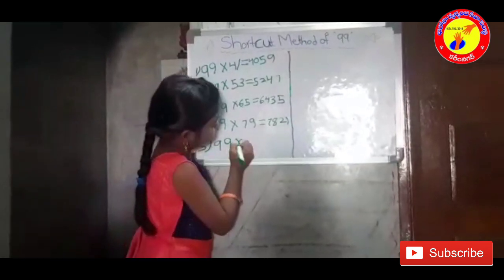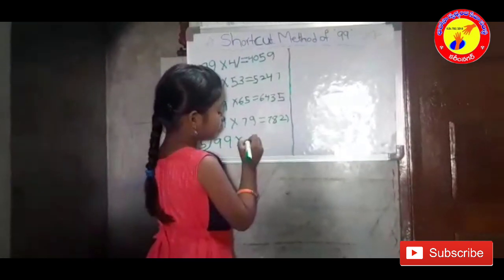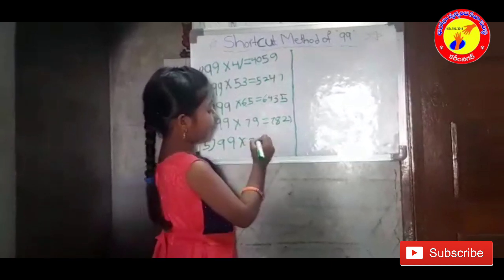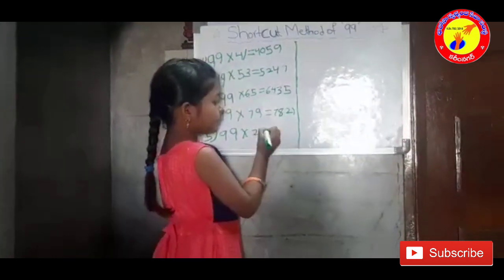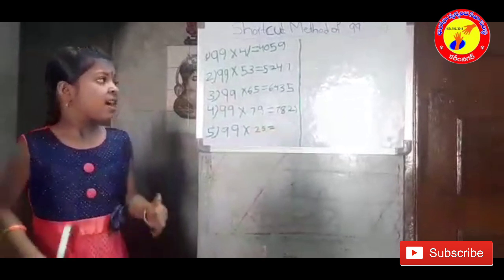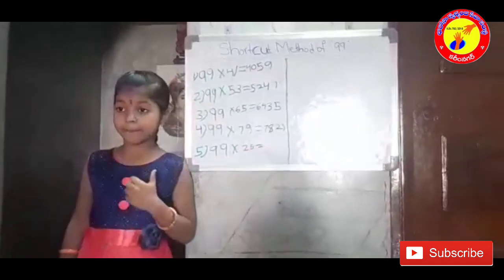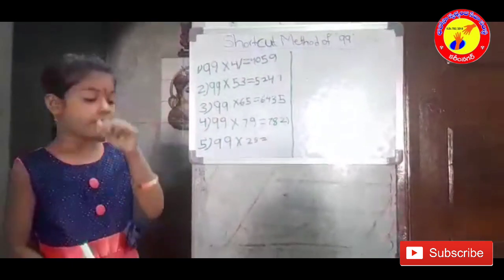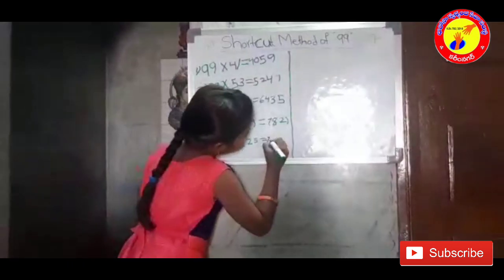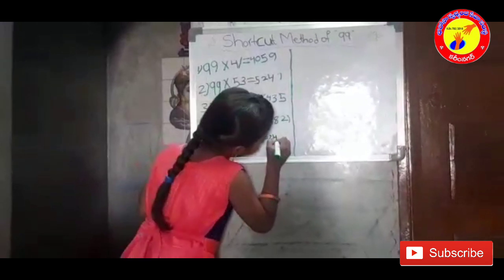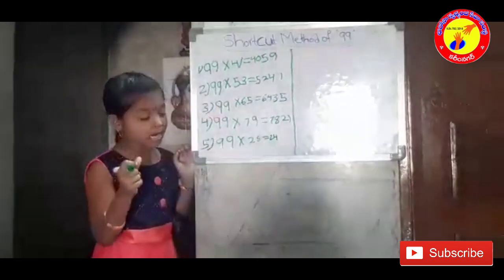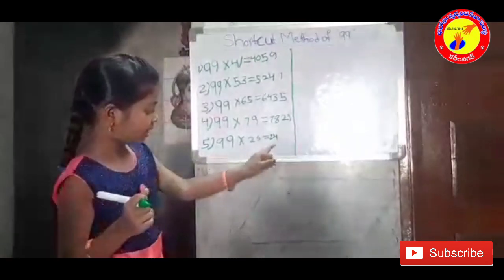99 into 25. In 25, subtract 1 — what number will come? It is 24. In 2, what number means 9 will come?